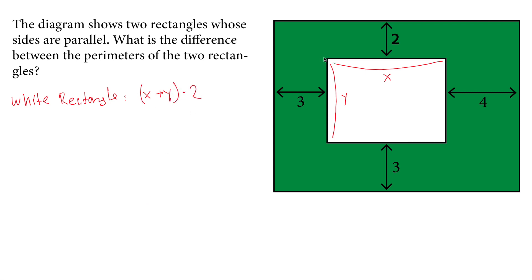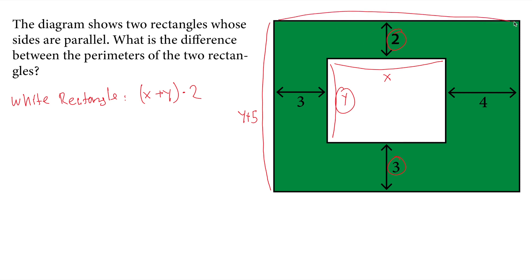For the bigger rectangle, the short side length will be 2 plus y plus 3, which equals y plus 5. The long side of the big rectangle will be 3 plus x plus 4, which equals x plus 7.